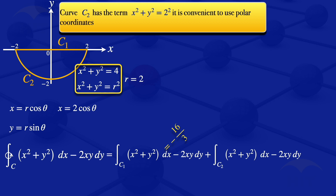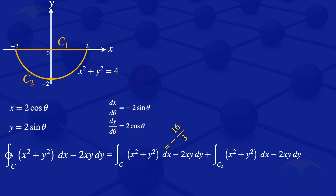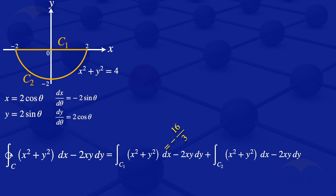We write x equals r cosine theta, and since r equals 2, we have x equals 2 cosine theta. And y equals r sine theta, so y equals 2 sine theta. Differentiating x with respect to theta gives dx/dθ equals minus 2 sine theta, and the derivative of y with respect to theta is 2 cosine theta. Therefore dx equals minus 2 sine theta dθ and dy equals 2 cosine theta dθ.